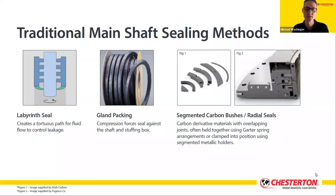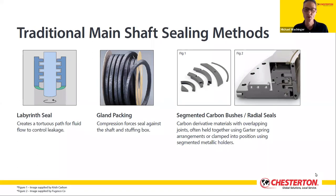Packing works by compressing material to seal against the stuffing box bore and the turbine shaft radially. The more you compress the packing, the harder it seals against those two elements, and so the lower the leakage rate — however, the higher the wear rate on the shaft sleeve becomes. Early packing designs required significant water to keep it cool from the friction generated by the turning shaft. Using supply water as cooling lubricant meant abrasive materials from the river became embedded in the packing and accelerated wear of the main shaft sleeve. Leakage would sometimes overwhelm the station's drainage system, leading to contamination of oil-lubricated bearings and overall flooding of the station.